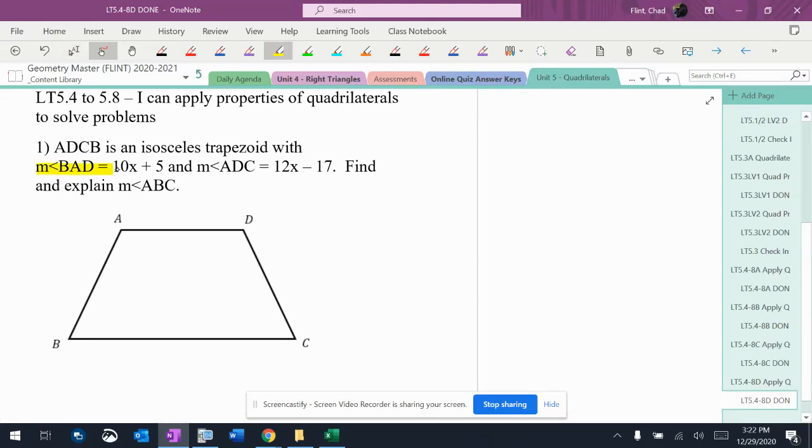So we've got an isosceles trapezoid here. The angle BAD is that angle right there, and then we have angle ADC which is this angle right here.